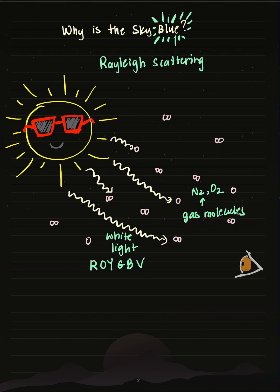So when the white light strikes these molecules, what happens is the shorter wavelengths—that's the blue light—get scattered.